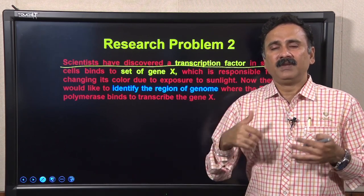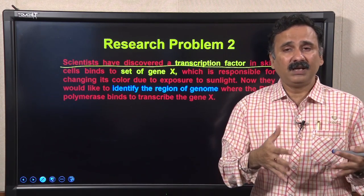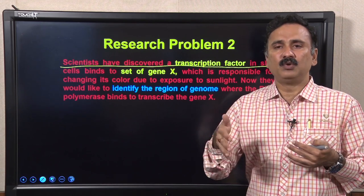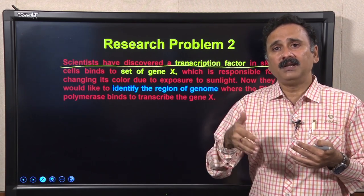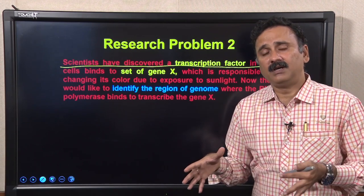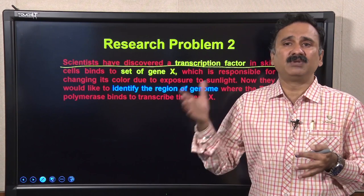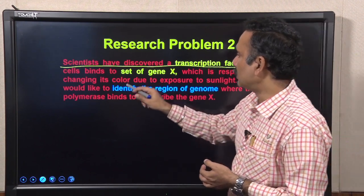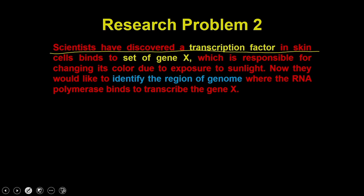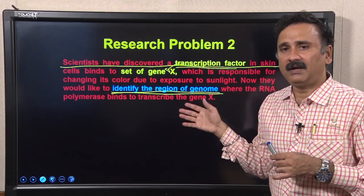In the previous problem, scientists have identified that a transcription factor is interacting with DNA, and based on that assay they can identify the transcription factor. Now what they want is to know which region of the genome — or which region of the DNA — the transcription factor is binding to. So they have identified the transcription factor and know it is binding to gene X, but they want to identify the specific binding region. This question can be solved by another assay.